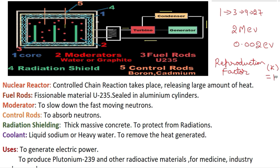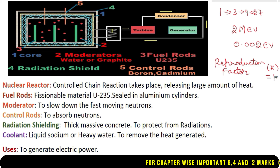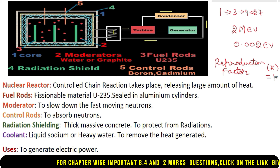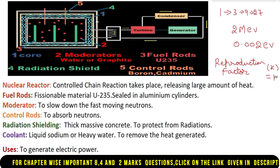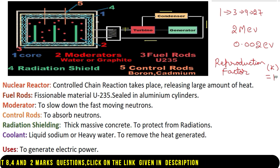During the nuclear fission process, a large amount of heat is released. This heat is absorbed by the moderators, and over time the entire core becomes heated up. The coolant surrounding the core absorbs this heat, gets heated up, and enters into the steam generator. The steam generator has pipes through which water flows, and this water absorbs the heat from the steam generator.